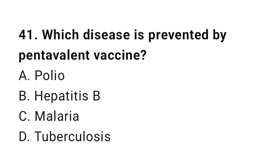Question 41: Which disease is prevented by the pentavalent vaccine? The right answer is B: hepatitis B.